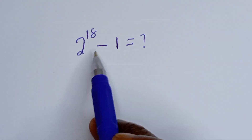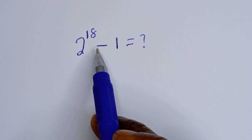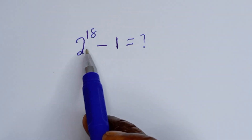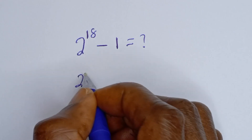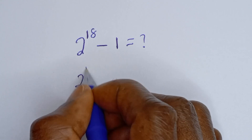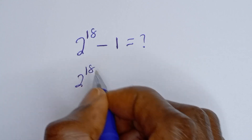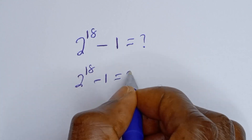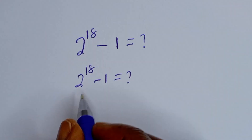Hello, how to simplify this nice problem. 2 to the power of 18 minus 1 is the unknown.